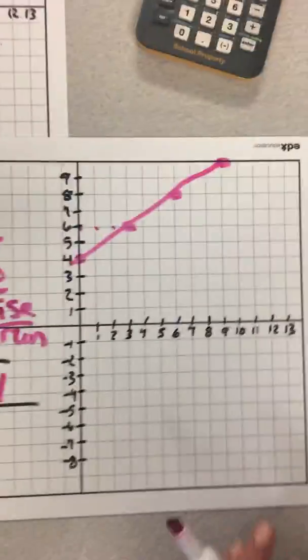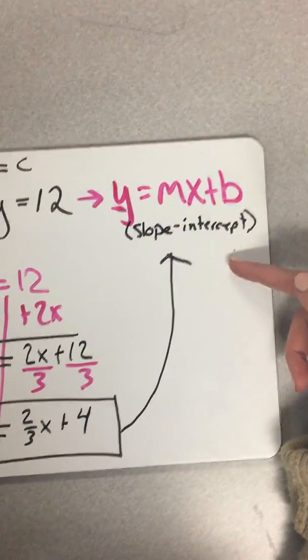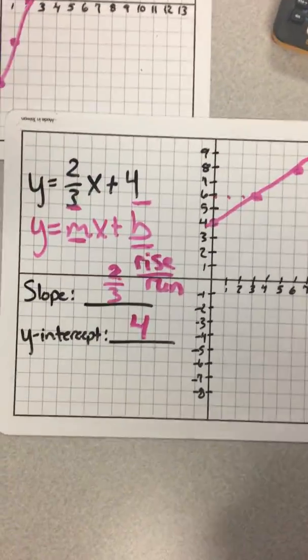So we went from a standard form over here, turn it to y-intercept form, and then we could make a graph out of it with an intercept and a slope. All right, good luck. Thank you.